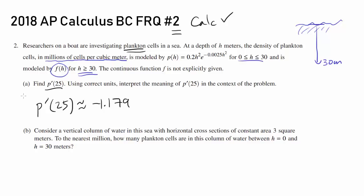We know P'(25), and we want to interpret this in the context of the problem using correct units. Make sure you pay attention to this unit. What does this mean? Well, what's P'? P' is the rate of change, the instantaneous rate of change of P, which is the density of plankton.